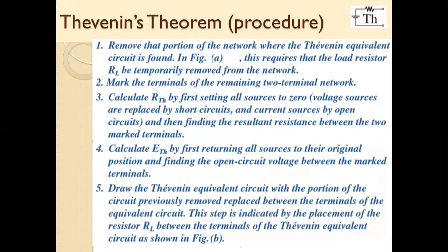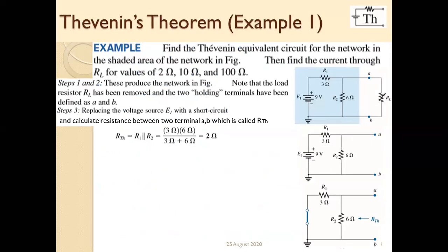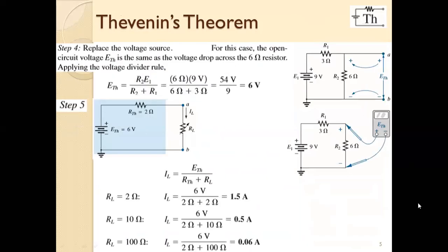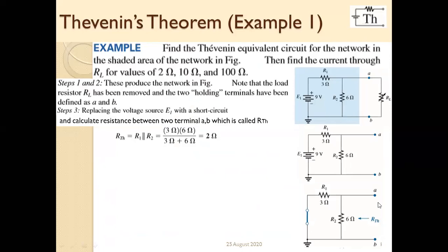Now, how many steps can we use to convert any network into a Thevenin equivalent network? Step number one: remove the external part of the circuit. Step number two: name the two terminals as A and B. Step number three: calculate the resistance between A and B such that if there is any voltage source, replace it by a short circuit, and if there is any current source, replace it by an open circuit. Then calculate the resistance between the two terminals, which is called RTH.